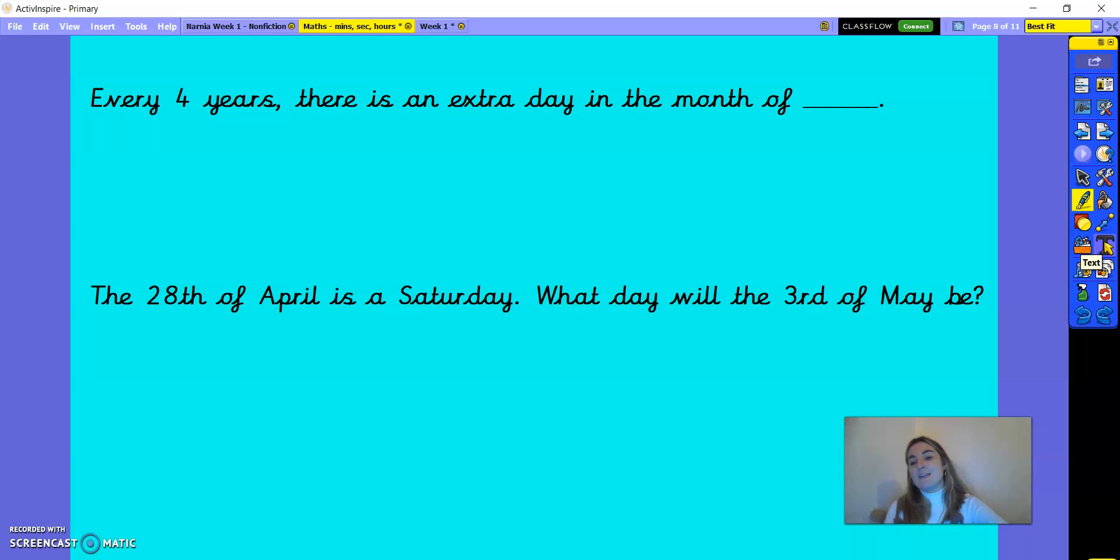And we are going on to the second part of our warm up. So every four years, there is an extra day in the month of... Okay, so what you might need to do here is have a go with your knuckles, the thing that Miss Long was doing the other day. Remember, she was counting one month on a knuckle and one month in between her knuckle. Now, every four years, there is a leap year. And the leap day happens in the month of February, because in February, there is only 28 days. But every four years, we have 29 days in February.